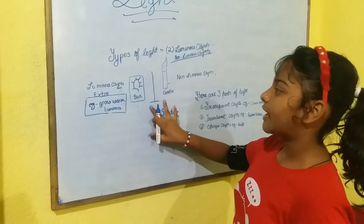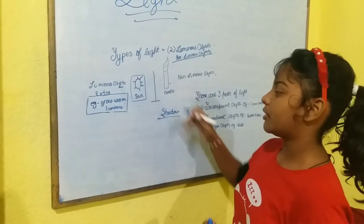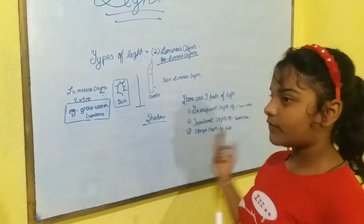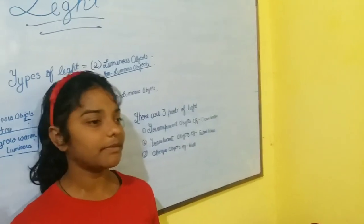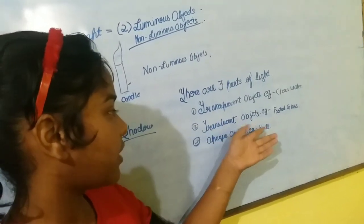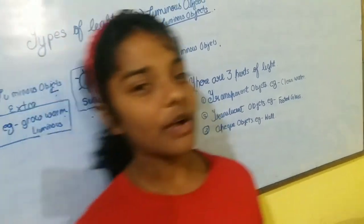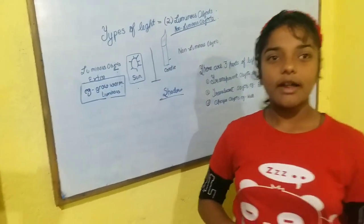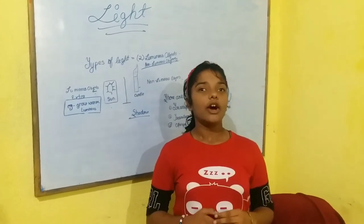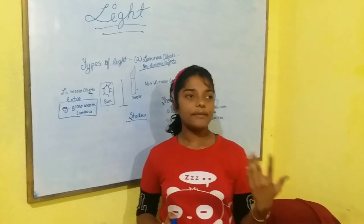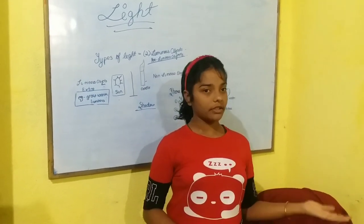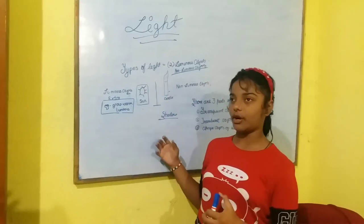Now I would like to talk about the three parts of light. There are three parts: transparent objects, translucent objects, and opaque objects. The definition of a transparent object is an object that allows all the light to pass through it.